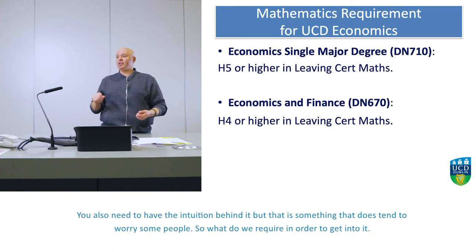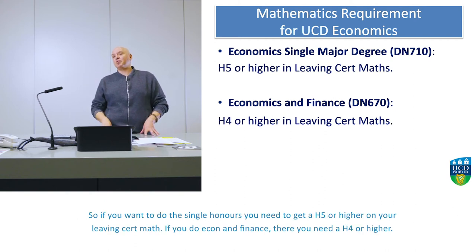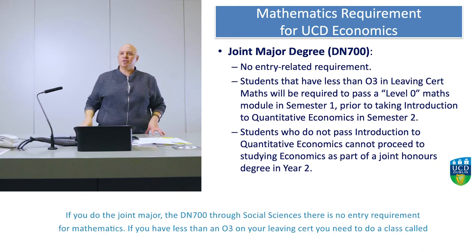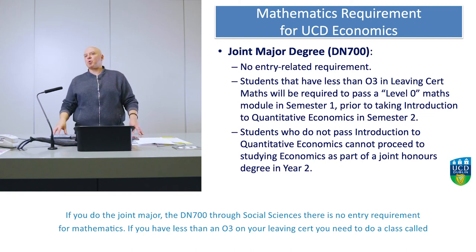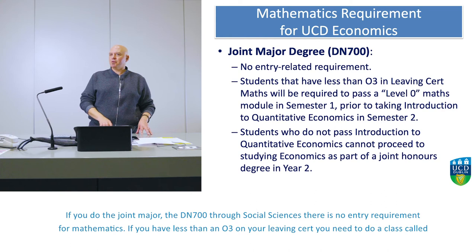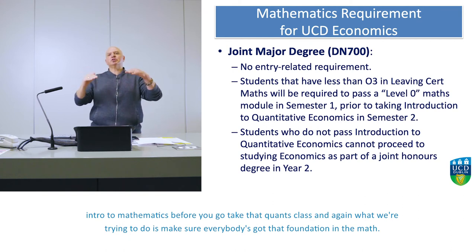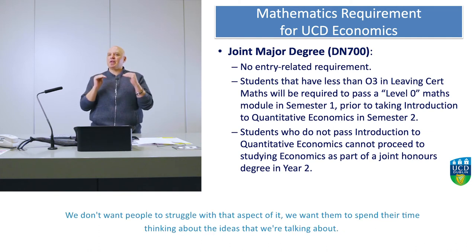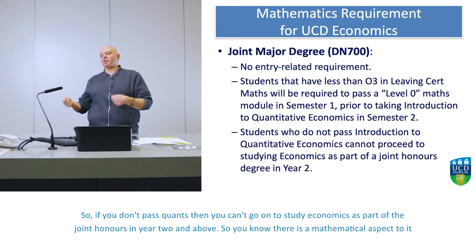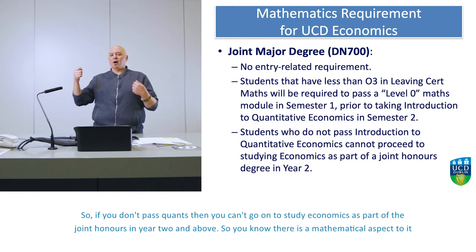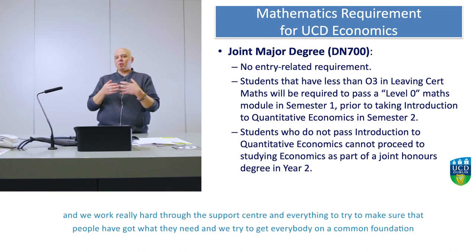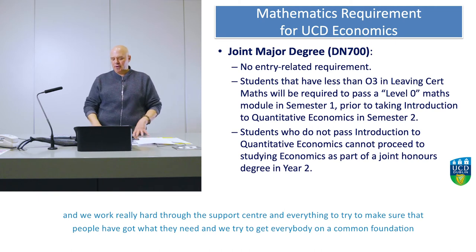What do we require to get in? For the single honors, you need an H5 or higher on your leaving cert math. For economics and finance, you need an H4 or higher. For the joint major, the DN700 through social sciences, there is no entry requirement for mathematics. If you have less than an O3 on your leaving cert, you need to do a class called intro to mathematics before taking the quantitative economics class. We try to make sure everybody has that foundation so people can spend their time thinking about the ideas rather than struggling with math. If you don't pass quantitative economics, you cannot go on to study economics as part of the joint honors in year two and above.